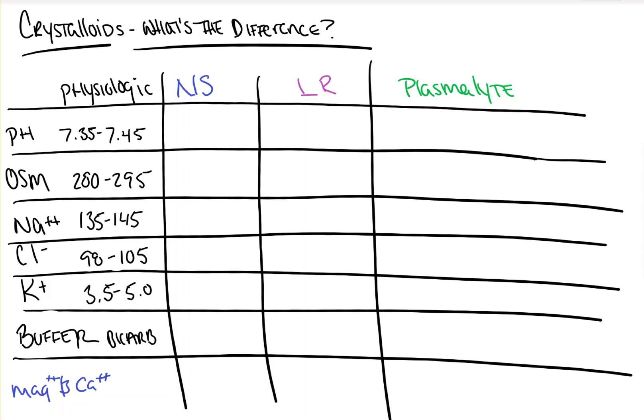Right off the bat, normal saline is a misnomer. There is nothing physiologically normal about normal saline, and that concept alone should serve as a good base for remembering some of this stuff. Normal saline isn't normal. Remember that.